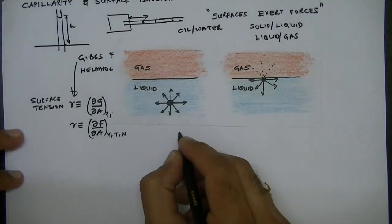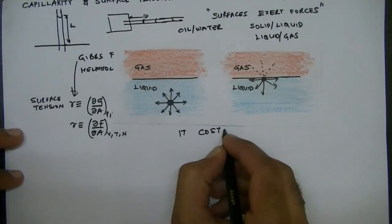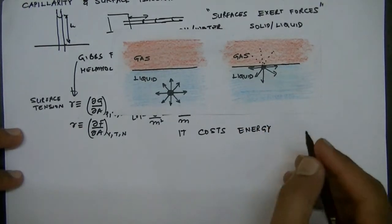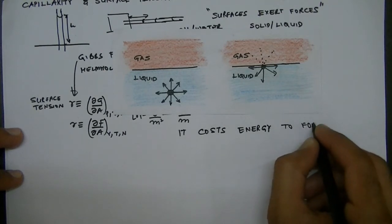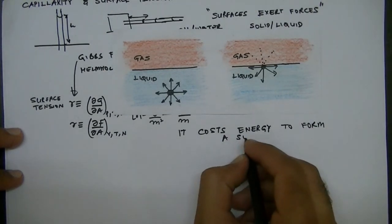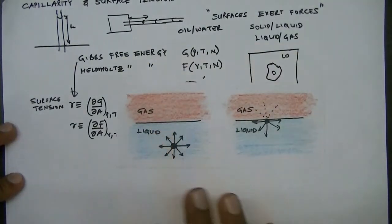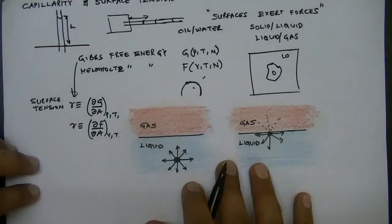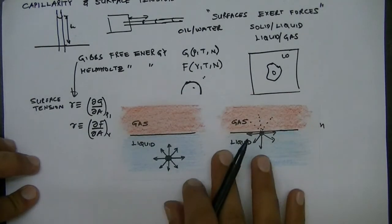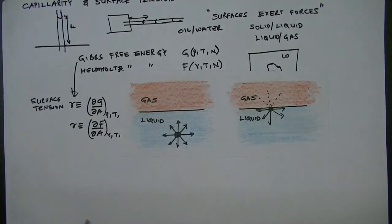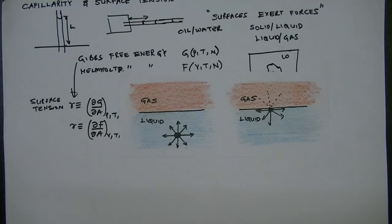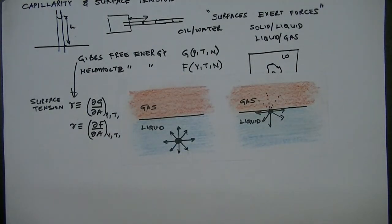From this we can conclude that it costs energy to form a surface. If you want to increase the surface area, you must supply energy, because the surface tension is always positive and you have to increase the energy of the system. Therefore, some work must be done to create new surface.